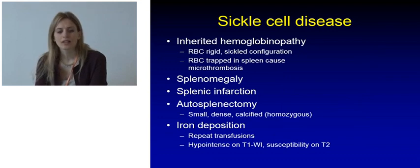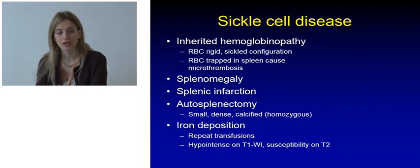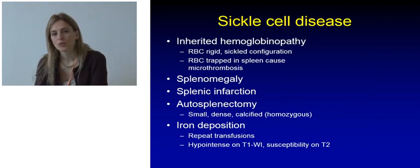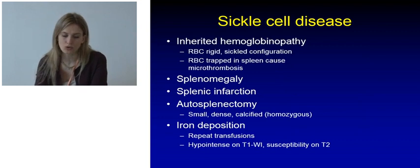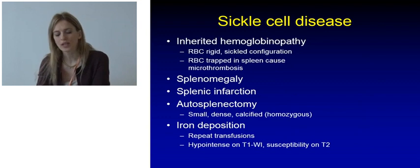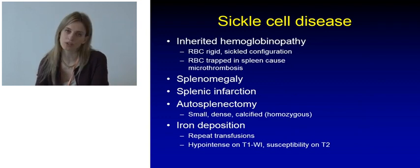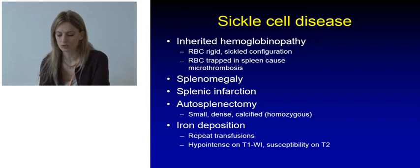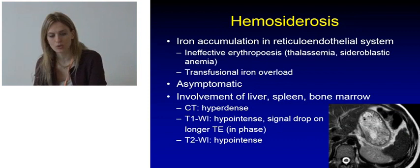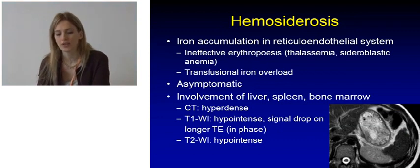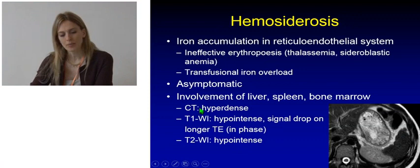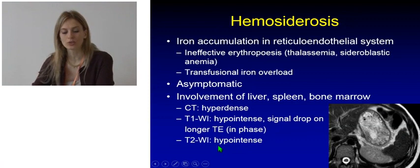Sickle cell disease is an inherited hemoglobinopathy which may present with splenomegaly and splenic infarctions. The cumulative effect of these infarctions may lead to what is called autosplenectomy, where the spleen is small, dense, and calcified. Patients with sickle cell disease undergo repeated transfusions and therefore may have problems of iron deposition. When we have iron deposition, the spleen appears hypo-intense on T1-weighted images and shows susceptibility artifacts on T2-weighted imaging, as seen in all cases of hemosiderosis with iron accumulation in the reticuloendothelial system. The spleen is going to be hyperdense on non-contrast CT, hypo-intense on T1, and hypo-intense on T2.